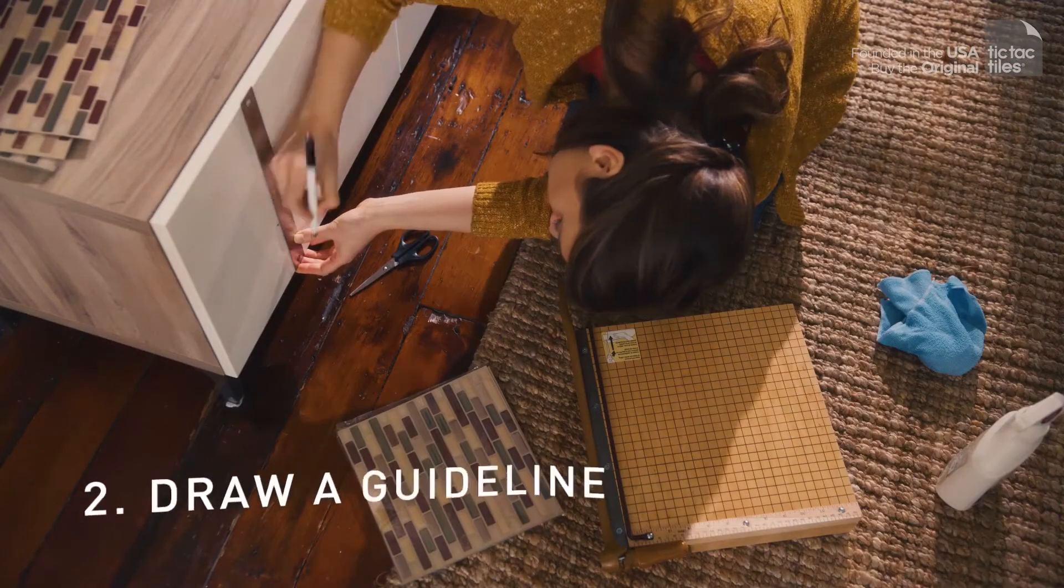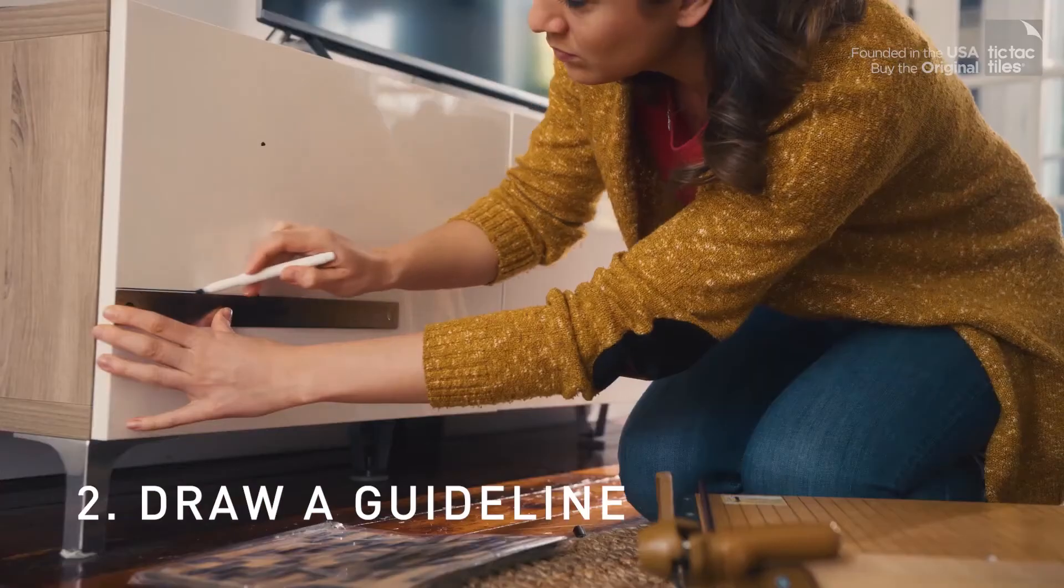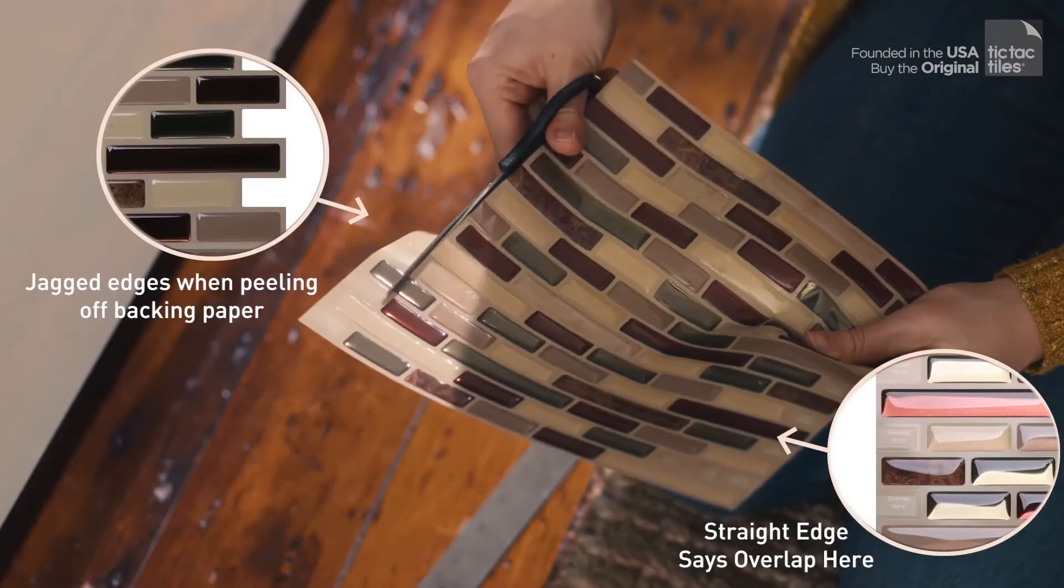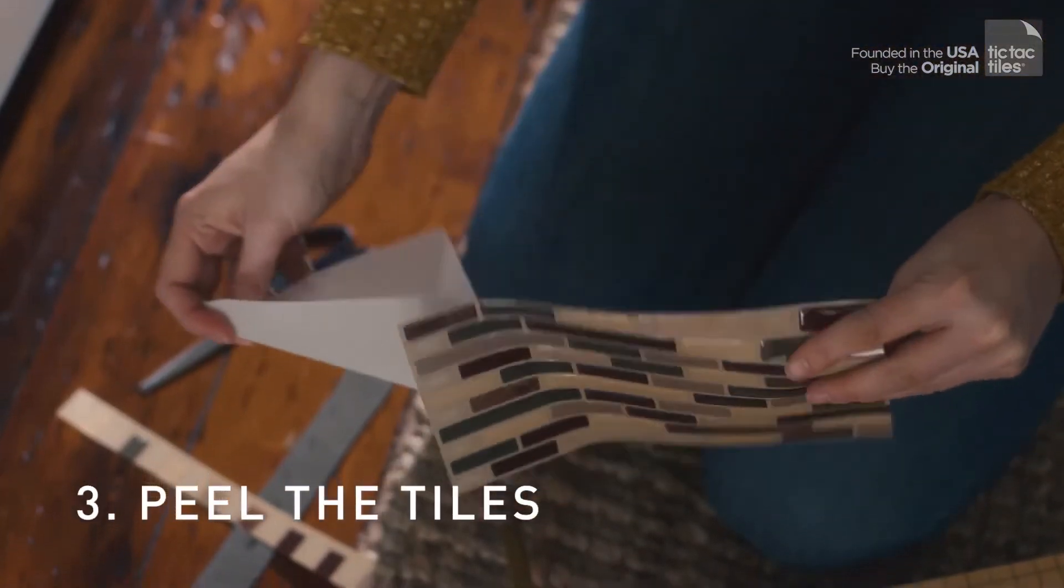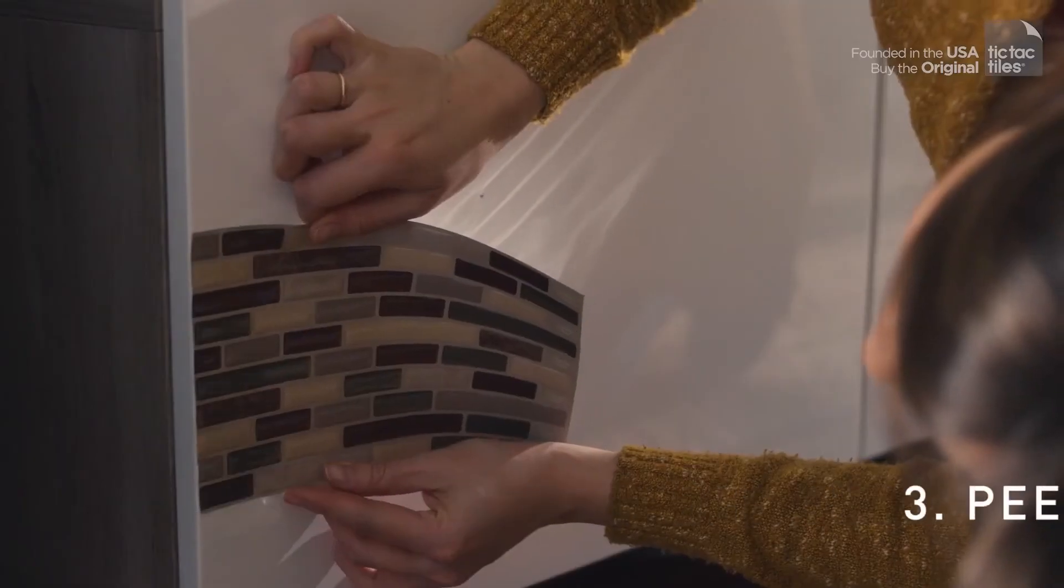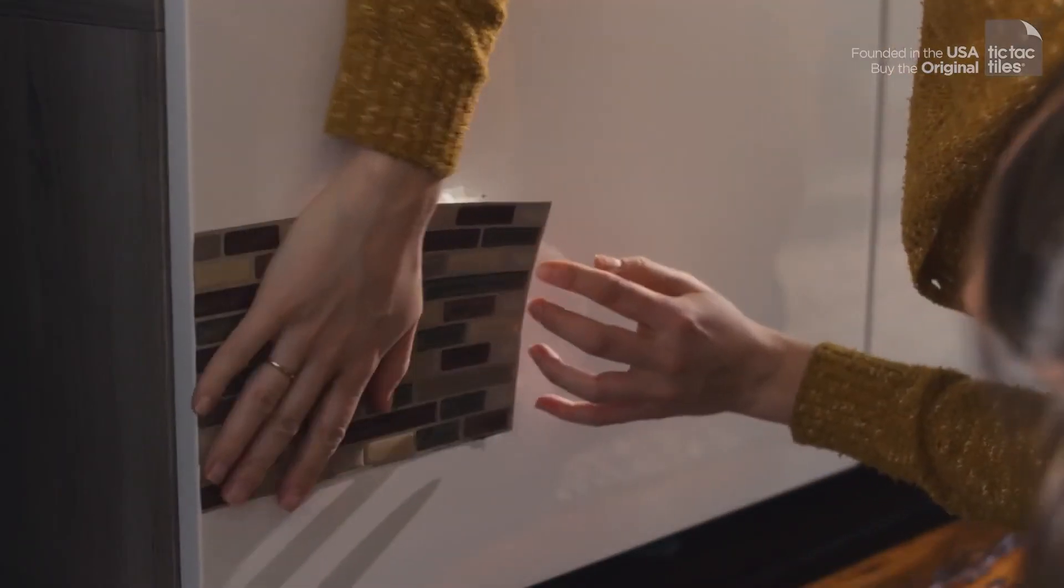Draw a guideline so you know exactly where to place your tiles. You need to cut off the jagged side of your first tile to create a straight edge. Peel off 2 inches from one side, apply to the surface, and slowly peel off the rest.